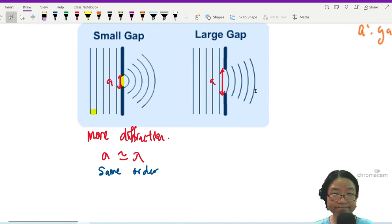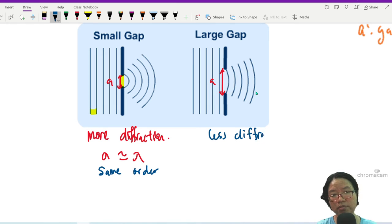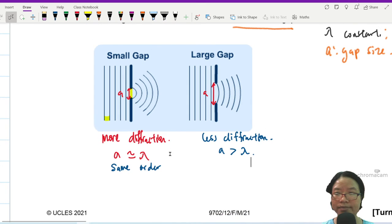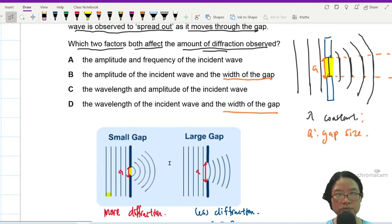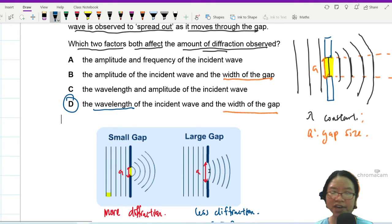So this one this is less diffraction because the gap size is bigger than lambda. So what can we change? Wavelength of the incident wave and the width of the gap. So this is the idea of diffraction.